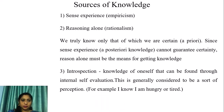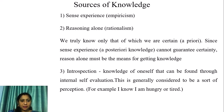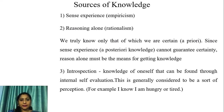The sources of knowledge which we get are from sense experience — that is known as empiricism — and reasoning alone, that is rationalism. We truly know that of which we are certain; that is a priori knowledge. Since experience-based posterior knowledge cannot guarantee certainty, reason alone must be the means for getting knowledge.